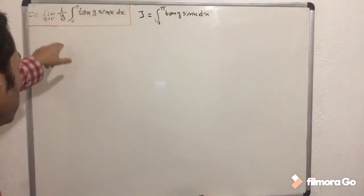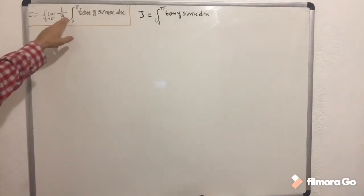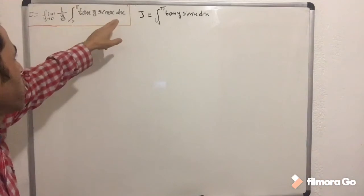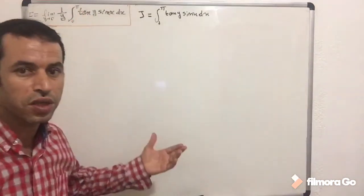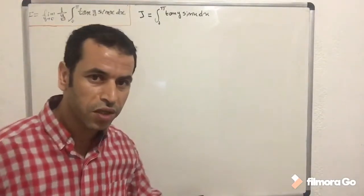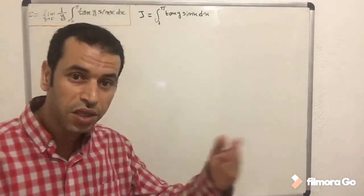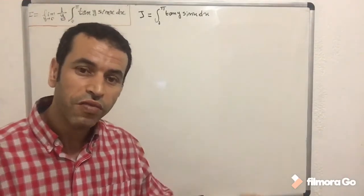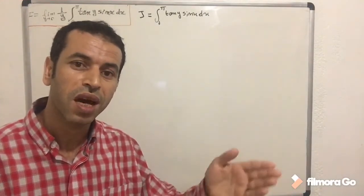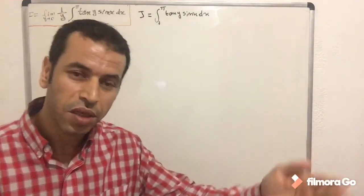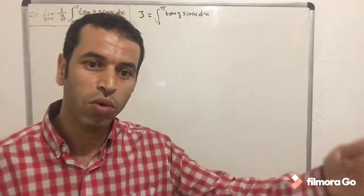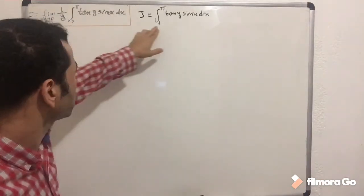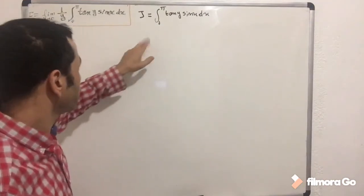As you can see, we have a product of two functions. The first is 1 over y, and the second is the integral from 0 to π of tangent(y)·sin(x) dx. This integral is a constant function because we have a definite integral. The difference between a definite and indefinite integral is that the definite integral, which has bounds, is a value — a constant. The indefinite integral has no bounds and is a function. In our case, the integral is a constant because it has bounds from 0 to π.